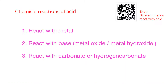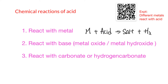Chemical reactions of acid, part 2. In our last video we talked about the reactions between metal and acid — different metals have different reactivities, some very reactive, some not. Last time we covered metal reacting with acid to give salt and hydrogen. Today we're going to talk about two more parts: reaction with a base (metal oxide or metal hydroxide), and reaction with carbonate or hydrogen carbonate.